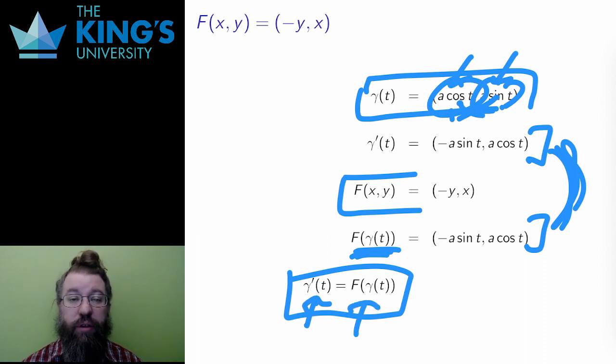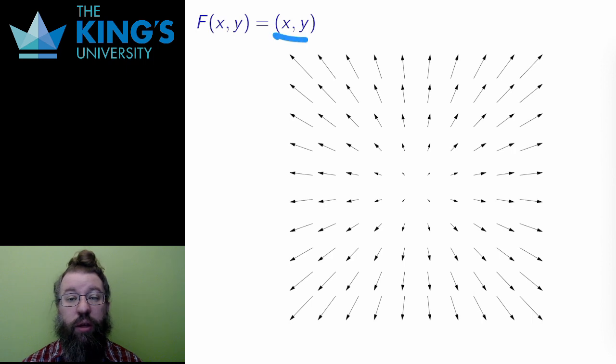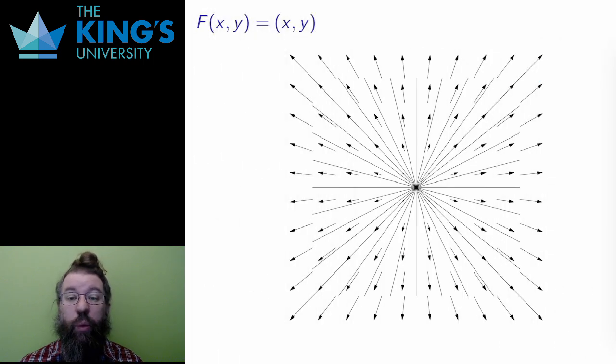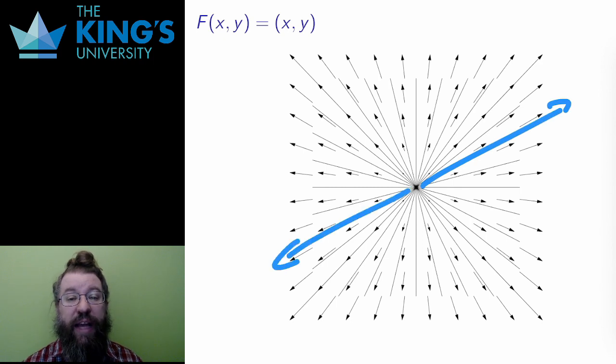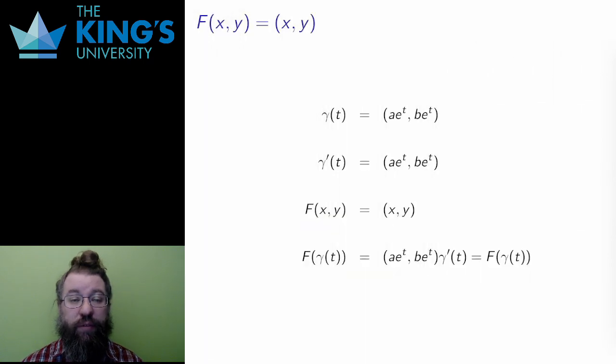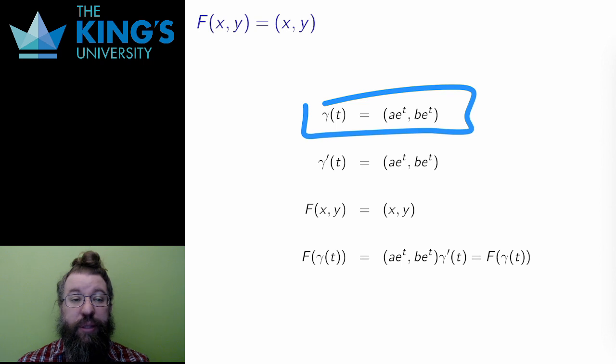This is the definition of an integral curve. The field direction matches the movement direction of the curve. Here is another example, the field f of (x,y) equals (x,y), with all vectors pointing out from the origin and growing in magnitude away from the origin. Here are the integral curves of this field. They are rays out from the origin whose outward direction of movement matches the outward pointing arrows of the field.